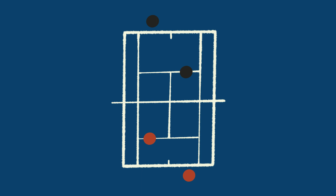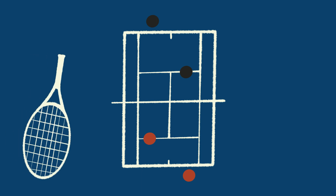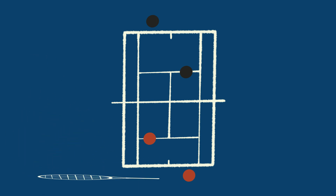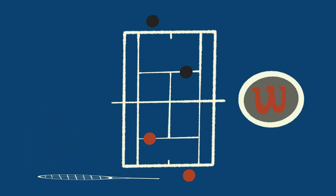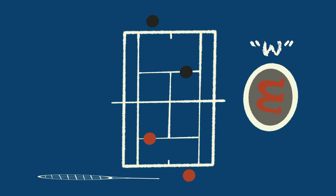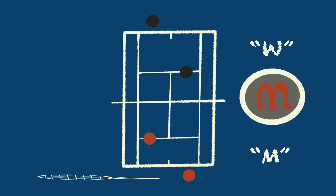Now let's start a match. To decide who serves first, we spin a racket. This is just like flipping a coin — we use the logo on the handle to determine heads or tails. The winner decides who serves.